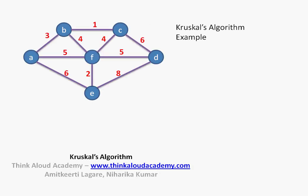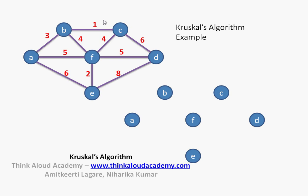Let us take an example of this particular graph and try to see how we can apply Kruskal's algorithm. The aim of Kruskal's algorithm is straightforward — it has to produce a minimum cost spanning tree. In Kruskal's algorithm, we first write all the vertices. The algorithm says: connect the vertices which have the minimum edge and which do not form a loop.